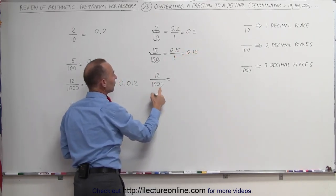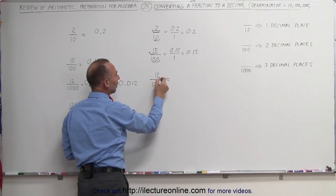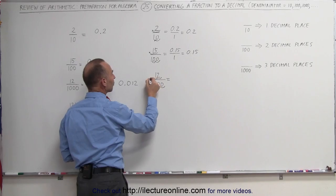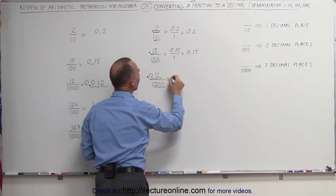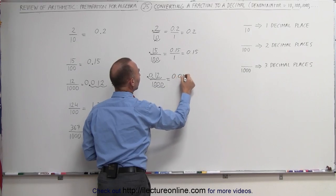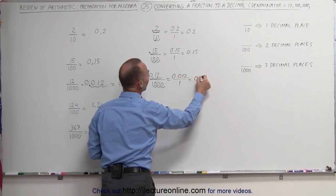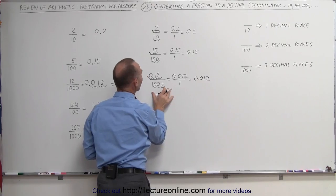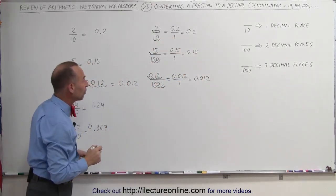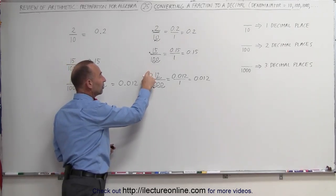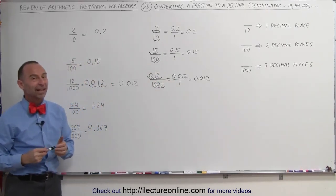For 12 divided by 1000, we move the decimal place three times in the denominator to turn it into a 1, which means we move the decimal point three spots in the numerator too. We need a placeholder zero, giving 0.012 divided by 1, or 0.012. This makes it really easy to remember how many decimal places to move when writing a fraction as a decimal. And that's how it's done.